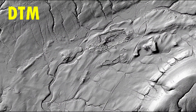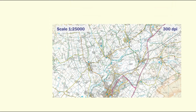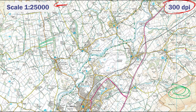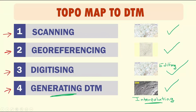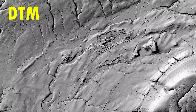This is a shaded relief of the digital terrain model that I produced from the topographic map provided at the beginning. I scanned this map, then georeferenced it, then digitized all the contour lines, and after that generated my final digital terrain model. I then converted the digital terrain model into a shaded relief — that is the final product.